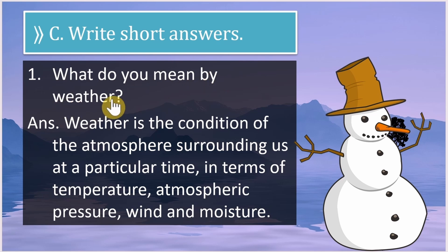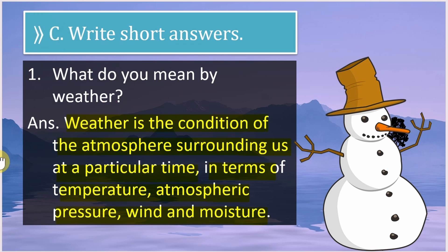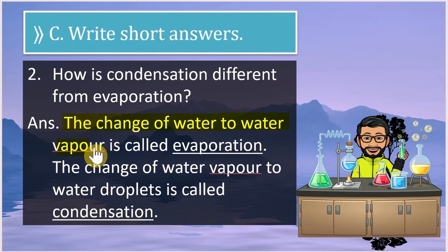Short answer question 1: What do you mean by weather? Weather is a condition of the atmosphere surrounding us at a particular time, in terms of temperature, atmospheric pressure, wind, and moisture.